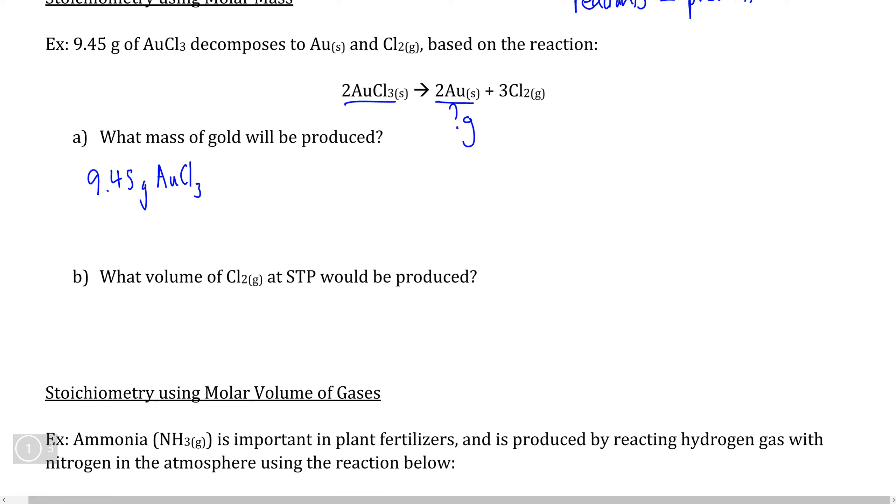We know from molar mass that we cannot compare the mass of AuCl3 and the mass of Au directly with each other because the molar masses are different. However, if we were to convert this measurement into moles using the molar mass, moles we could compare directly with each other. So let's look up the molar mass values on the periodic table.